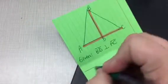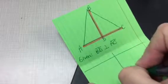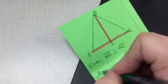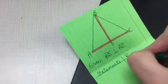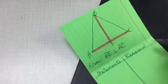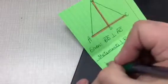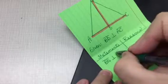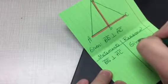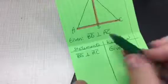So one final mini proof. On the left side, we have our statements. On the right side, we have our reasons. Okay, so we're going to start with our given information. Segment BD is perpendicular to segment AC. My reason, because it was given to me, is given.